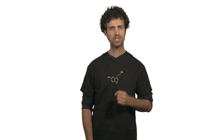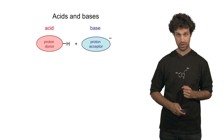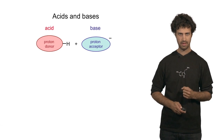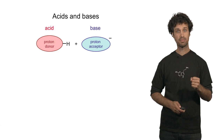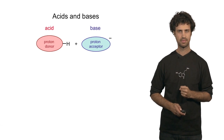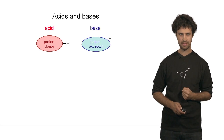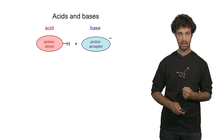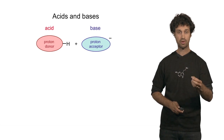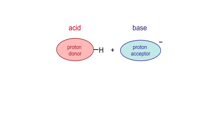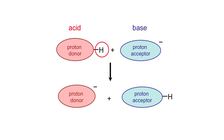To understand acid-base chemistry, let's look at the following example. An acid can be understood as a proton donor — it is a compound that can donate a proton to something else. That something else is called a proton acceptor, and a proton acceptor is the definition of a base. So when you bring an acid and a base close together, they can exchange a proton — the proton goes from the acid to the base.